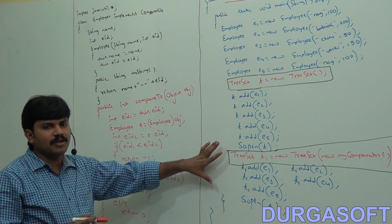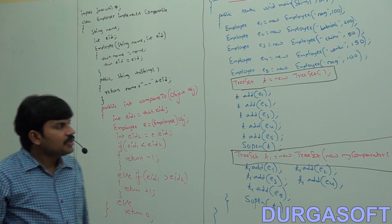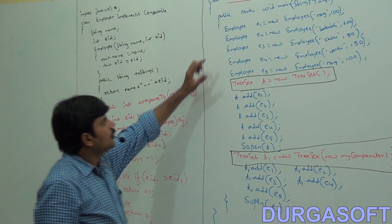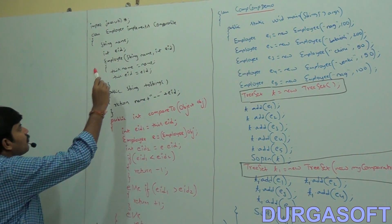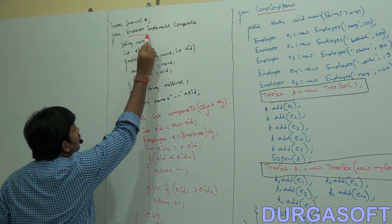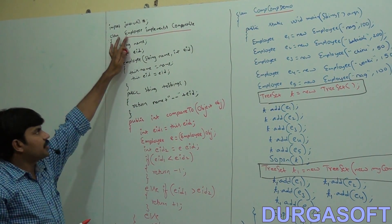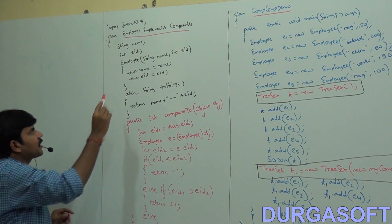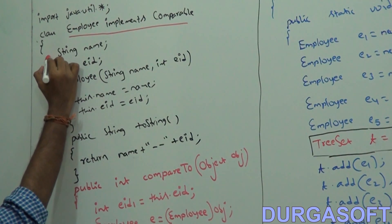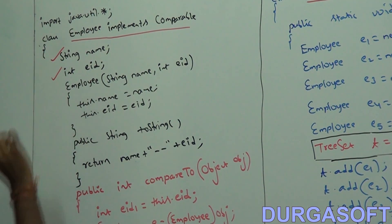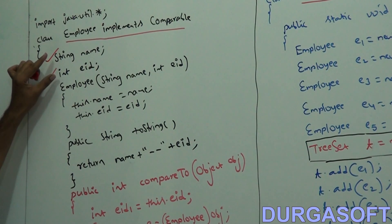Here in this example, both concepts are covered. Observe the class Employee — it implements Comparable. The Employee class contains two properties: employee name and employee ID.